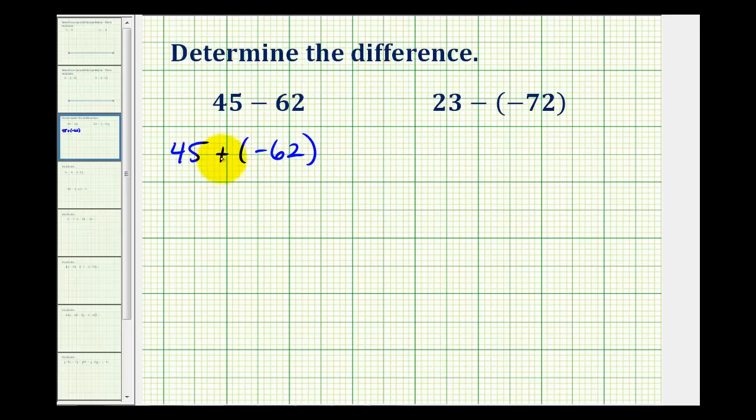Looking at this sum, notice the negative 62 is going to outweigh the positive 45, so the sum will be negative. Following the formal rules for adding integers, since we're adding integers with different signs, we're going to subtract their absolute values.